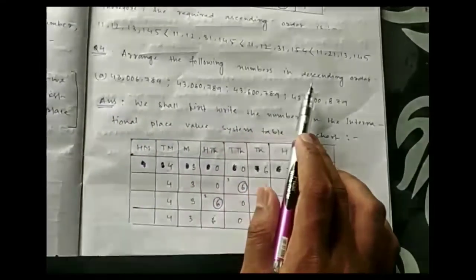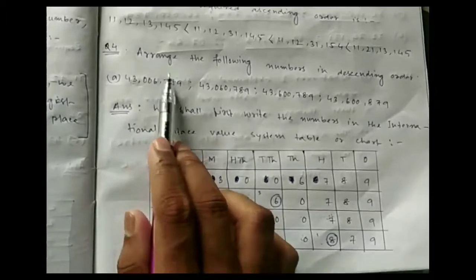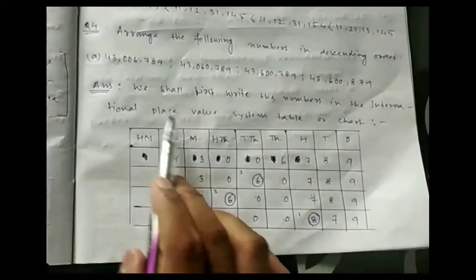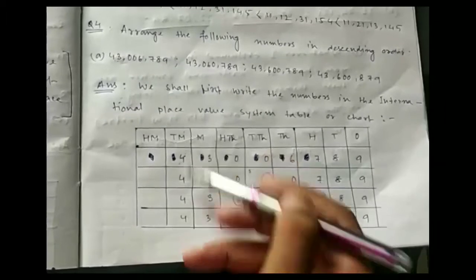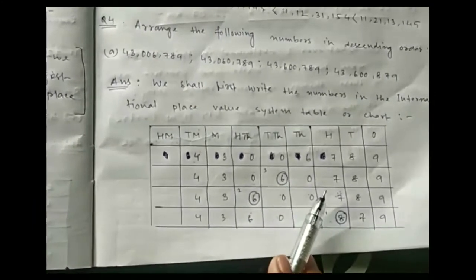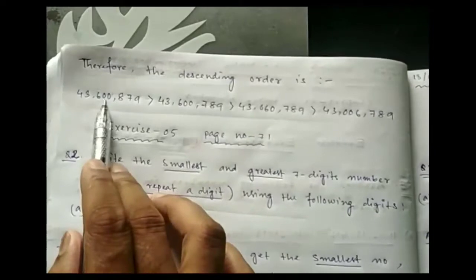Question number 4: arrange the following numbers in descending order, that is biggest to smallest. In this number, the comma is placed after every three digits, which means these are international numbers. So we draw the international place value system table. We put all numbers in the table, compare digits of every place, and search for the biggest number first. At last we get our required descending order.